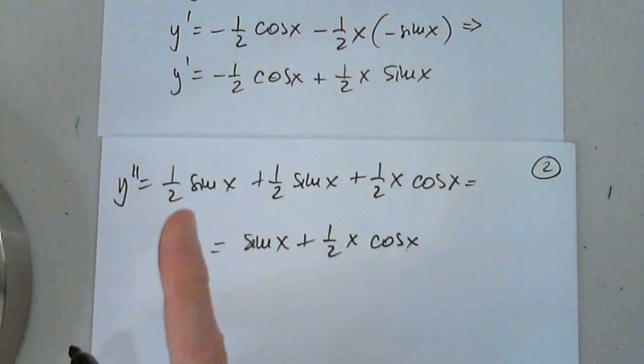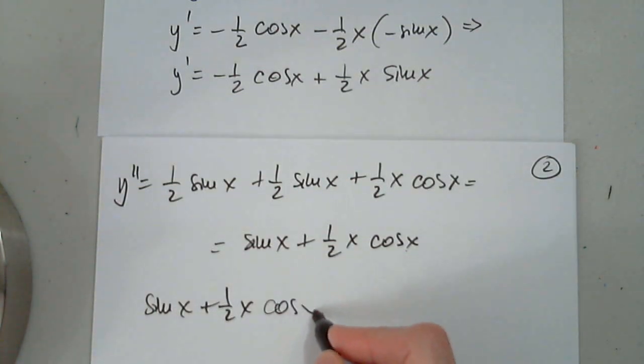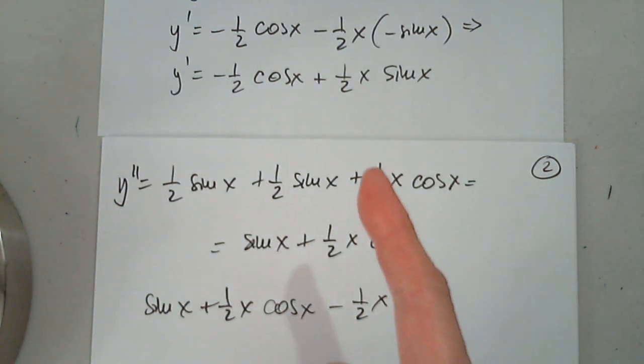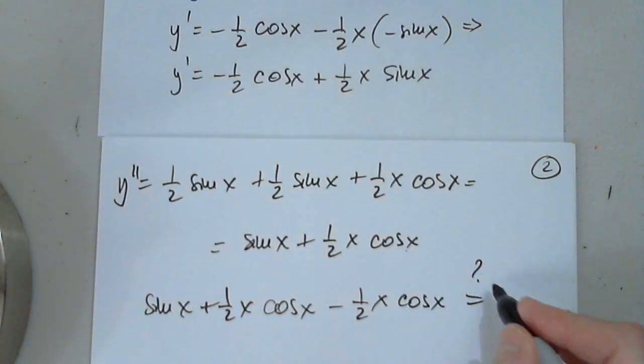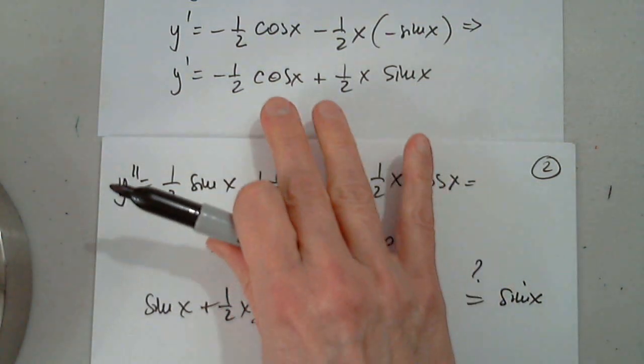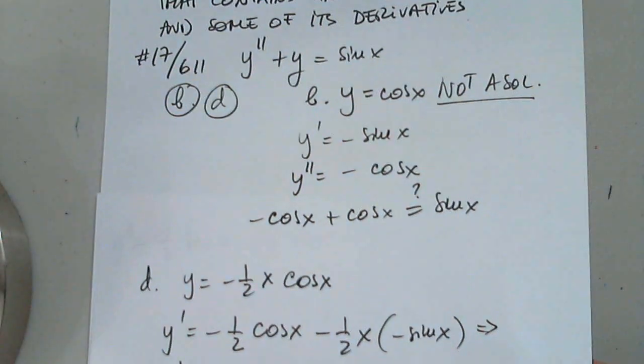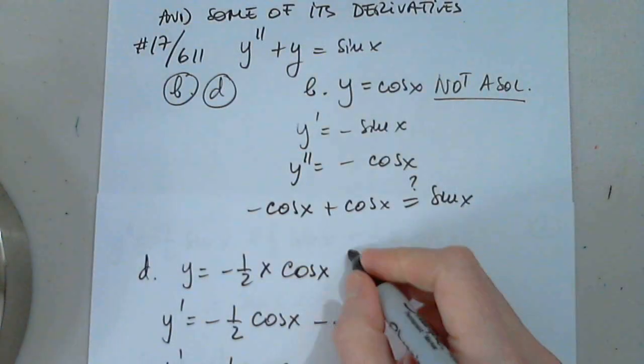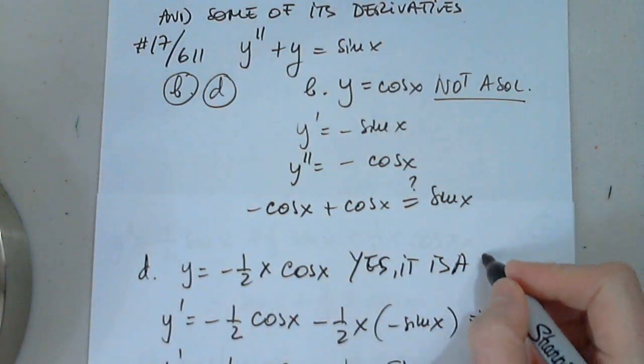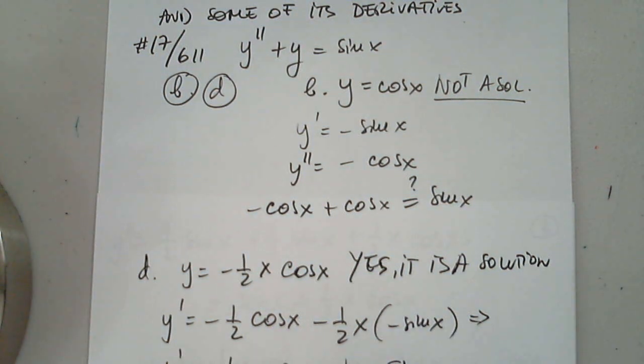So, the second derivative in the differential equation. So here it is. Sine x plus one half x cosine x. Then plus y. And y is minus one half x cosine x. So this was the second derivative plus y. Question. Does this equal sine x? Yes, it does. Sine x equals sine x. So I'll come back here to option D or part D. Yes, it is a solution of the differential equation.